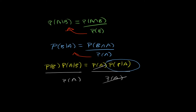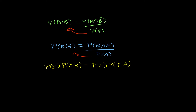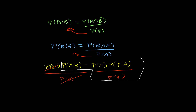If you wanted to go the other way around — say you want to find the probability of A given B — you do the same thing but divide both sides by the probability of B. These cancel out and you are left with: the probability of A given B equals the probability of A times the probability of B given A over the probability of B.